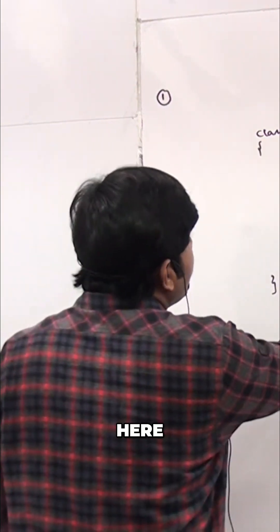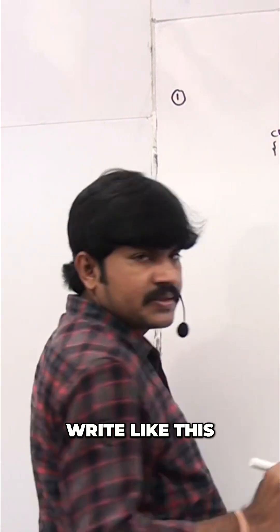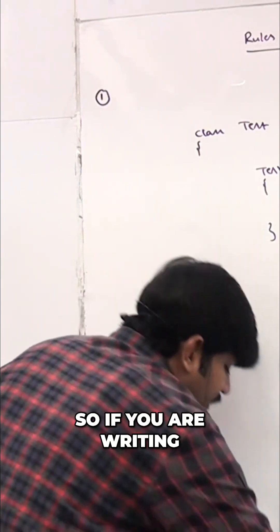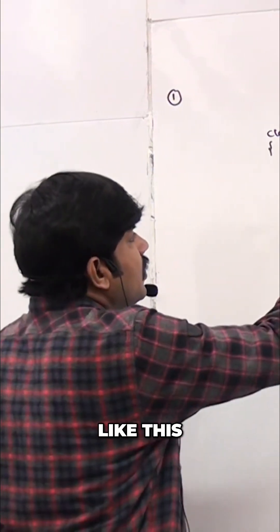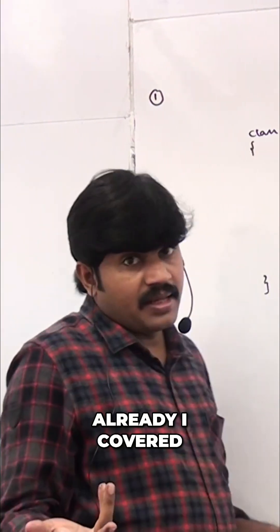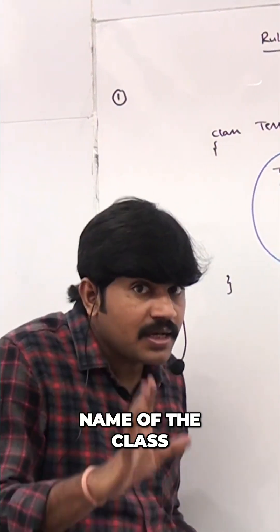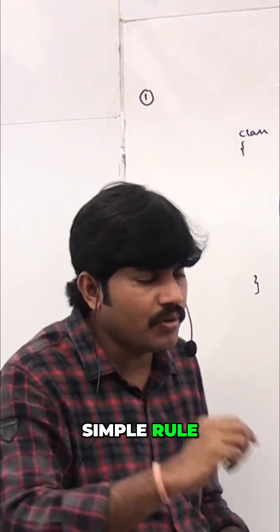So now here, compulsory we require to write like this. So if you are writing like this, now it will become constructor. The first rule I already covered - not required to keep much explanation. The name of the constructor and name of the class must be same. Simple rule, right?